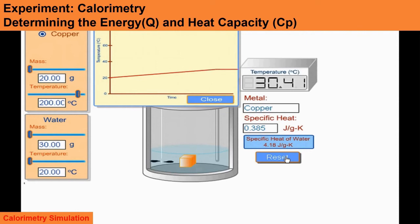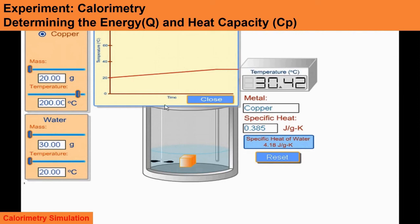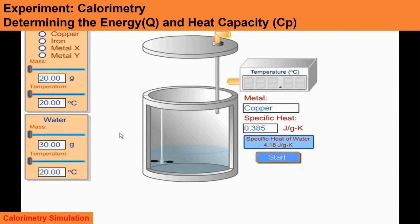The final temperature recorded is 30.41 degrees Celsius. The simulation shows the specific heat of copper, but in the actual experiment we can manually calculate the specific heat of the metal. Since we have the mass of copper, the mass of water, the initial temperature of copper, and the initial temperature of water, we can determine the final temperature for both — which is 30.41 degrees Celsius — and using the formula Q equals mass times specific heat times change in temperature, we can determine the energy and the specific heat.